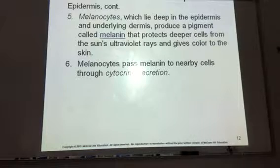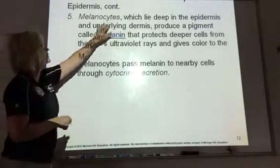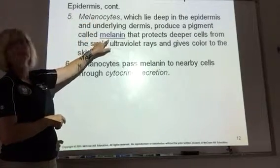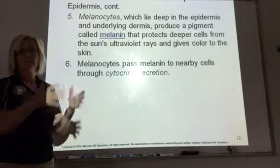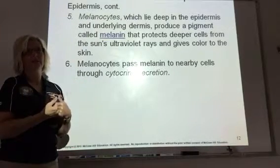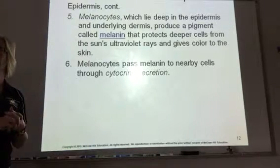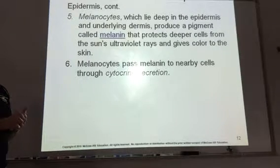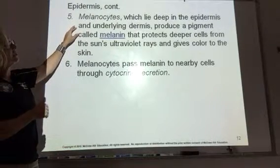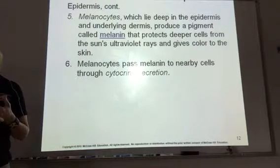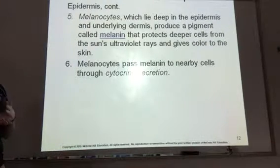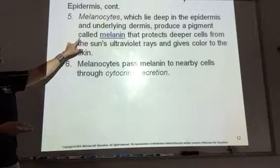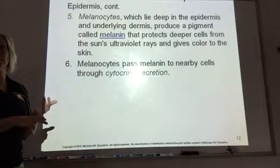Other things found in your epidermis include melanocytes. Remember, a '-cyte' is a cell, so melanocyte refers to cells that make melanin. This is what gives your skin color. Someone who has darker hair and darker skin will produce more melanin. These melanocytes are deep in the epidermis and even into the dermis, and they produce melanin pigment, which protects deeper cells from the sun's UV rays and gives you your tan.